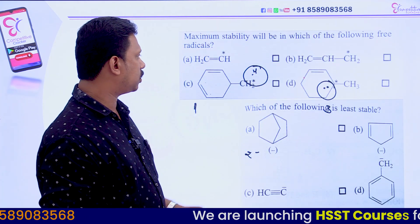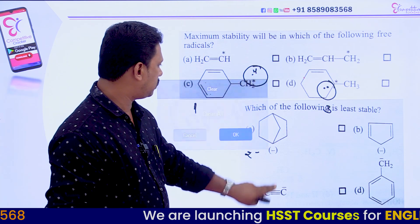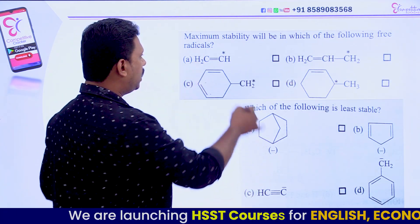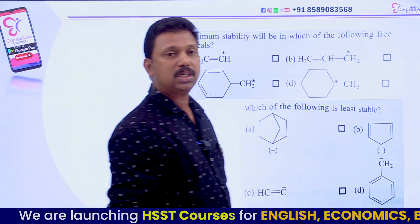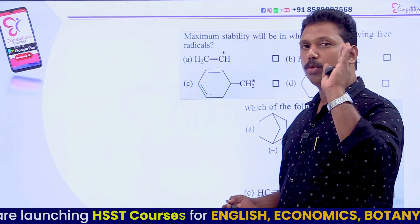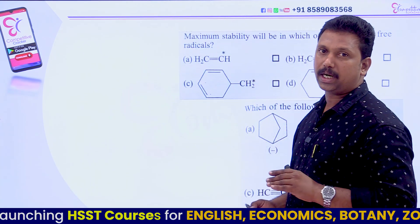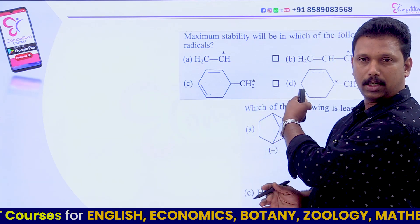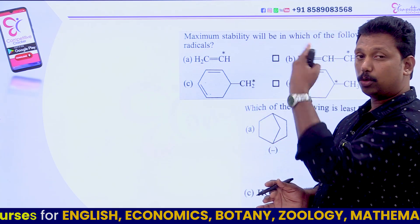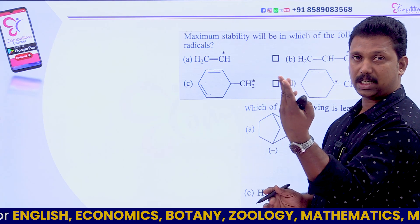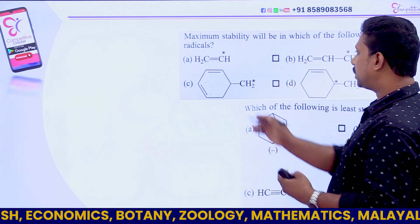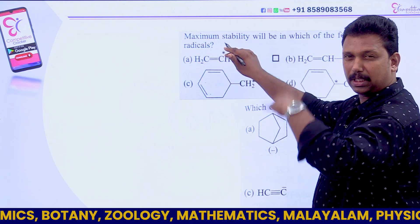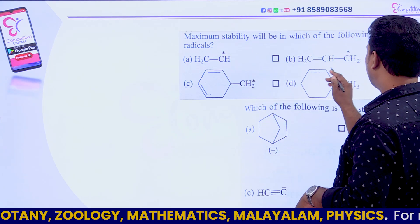Now let us move to another question. Here you can see four molecules — they are four free radicals. Which is the most stable free radical? As you know, the most stable free radical is a benzene free radical, but you don't have a benzene free radical in the options. So you have to consider the others: allyl, tertiary, secondary, primary, and here it is vinyl, which is one among the least stable free radicals.